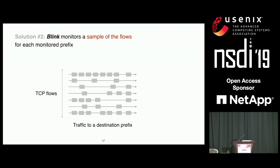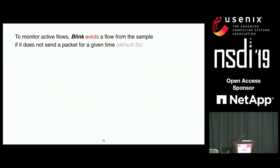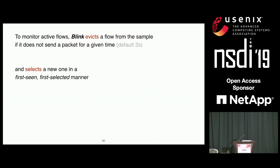One challenge is that Blink needs to monitor active flows — flows that are sending packets and will send retransmissions if there is a failure. By default, Blink monitors 64 active flows per prefix. Why 64? Because it's a sample large enough to detect prefix failures, but still relatively low so we don't use too many resources per monitored prefix. To maintain active flows, Blink evicts a flow from the sample whenever that flow doesn't send a packet for two seconds — enough time to see the first few retransmissions if there's a failure, but short enough that inactive flows get quickly evicted. When a flow is evicted, Blink selects a new one in a first-seen, first-selected manner.